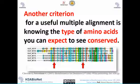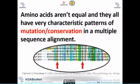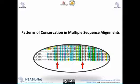Another criterion for a useful multiple alignment is the type of amino acid that is conserved. You look at what type of amino acid makes a difference, because not all amino acids are equal — they have a characteristic pattern of mutation and conservation in multiple sequence alignment. Some amino acids can be replaced by others, and some cannot; if that replacement happens it can make a big change in the characteristics of your protein.